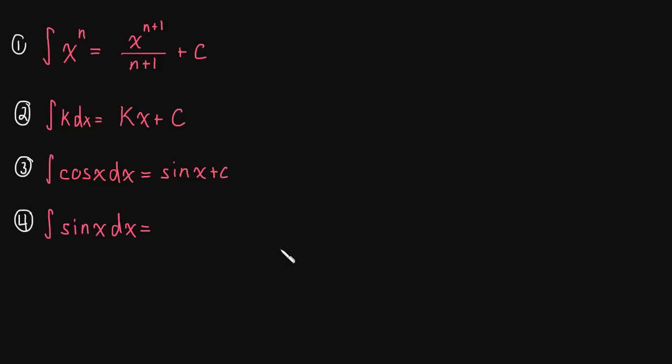Well, what do you have to take the derivative of to get sine? You have to take the derivative of negative cosine. And think about that. The derivative of cosine is negative sine. So we have to multiply by a negative in order to get this to be positive sine.